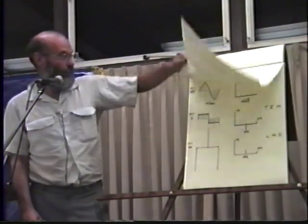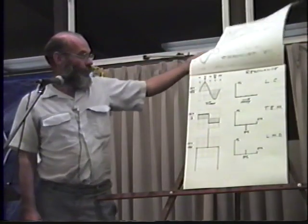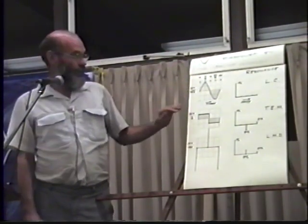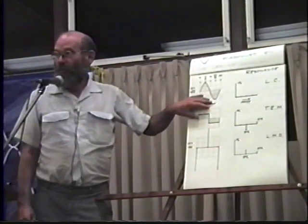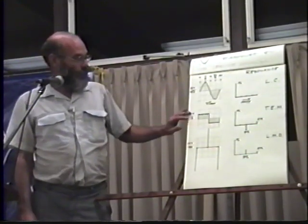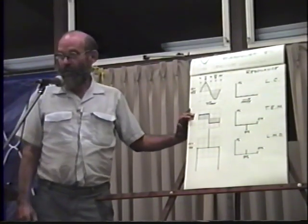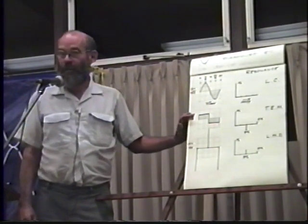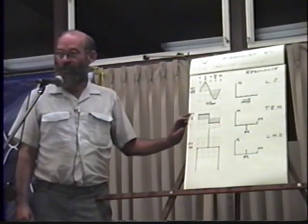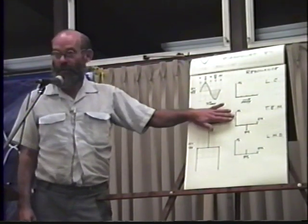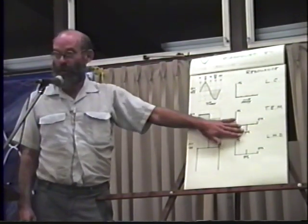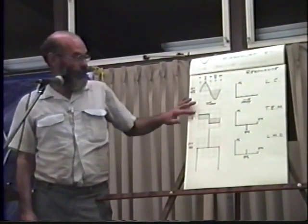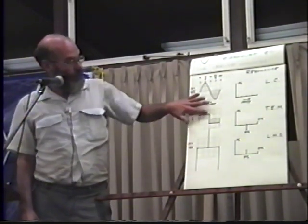Carrying this concept further, if we take the resonant action of a simple LC circuit, it produces a sinusoidal function. But if we take the resonant action of a quarter-wave transmission line, shorted at one end and open at the other, not only will it resonate at the fundamental frequency, but it will resonate at the third harmonic, fifth and ninth, and ad infinitum all the way out. And it will produce this waveform.